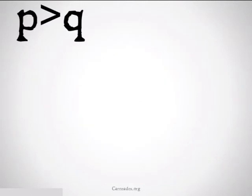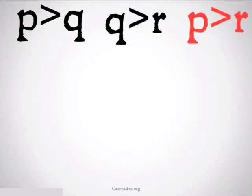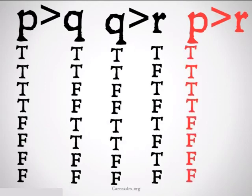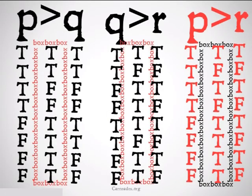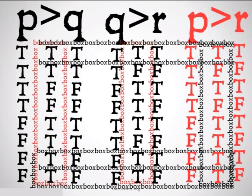Let's take a look at the truth table. It would look like P implies Q, Q implies R, therefore P implies R. We fill in our truth tables as normal. We focus on the truth values under the conditionals, and we see that in the three worlds where the two premises are true, the conclusion is also true. So this is a valid form of argument.